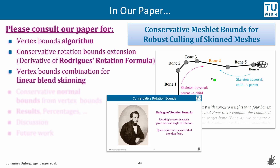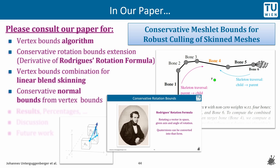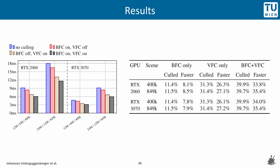Furthermore, we describe how vertex bounds can be combined to be usable with linear blend skinning, and we describe our algorithm for computing conservative normal bounds per meshlet. We present and discuss our results and show classification percentages. The positive effect of culling on render times can be observed in our results. The chart on the left-hand side shows that render times without culling are significantly higher than those when culling is enabled. Pipelines with both backface culling and view frustum culling enabled led to significant render time reductions — in particular, if 40% of meshlets were culled, render times were reduced by almost 34% in one of the tests.